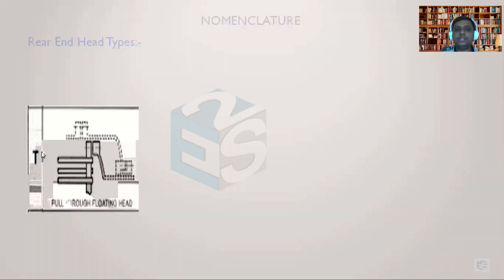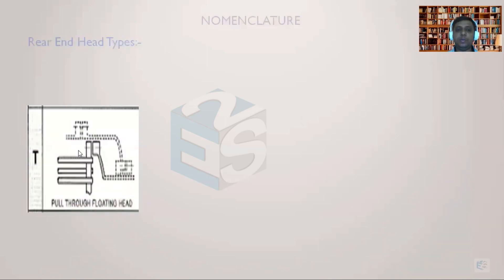The next type is called a T-type. It is also an internal type of floating head like the one we have seen in the case of the S-type heat exchanger, but the difference here is that there is no backing device. The tube sheet itself will extend as a flange, and the floating head will have a flange, so they will be tightened against one another. This entire assembly can be removed. The basic disadvantage of T-type over S-type is as follows.